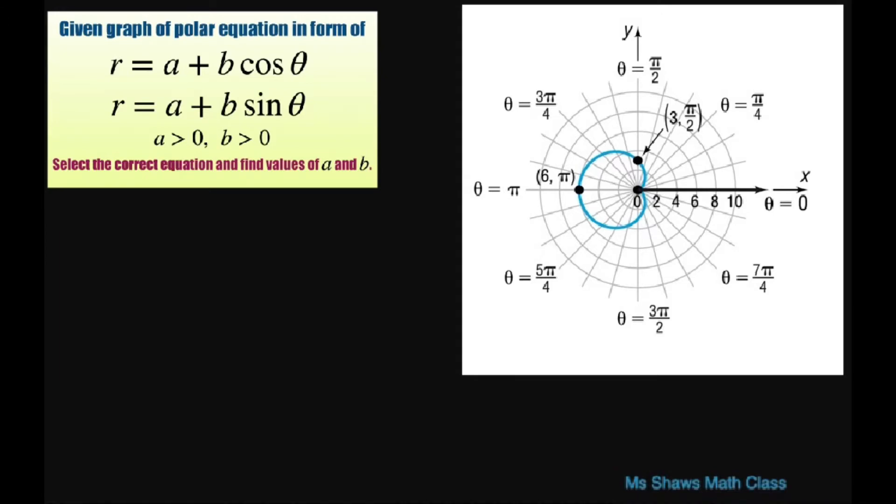Now, what we have to decide is if it's cosine or sine. It's going to be cosine because it reflects over the polar axis or your x-axis. Since it reflects over this axis, that means it's going to be cosine.